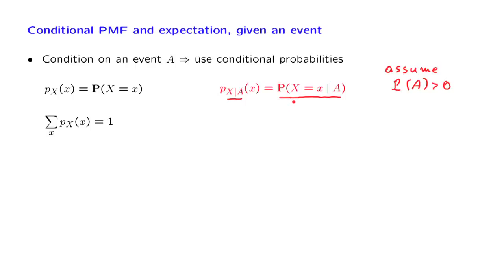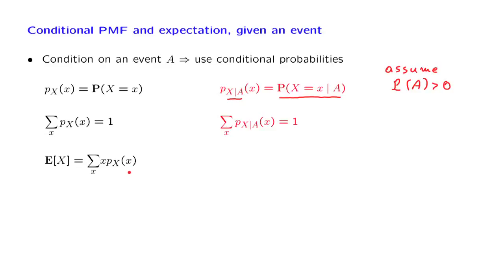This conditional PMF is like an ordinary PMF, except that it applies to a new or revised conditional model. As such, its entries must also sum to 1. Now, the random variable x has a certain mean, or expected value, which is defined the usual way. In the conditional model, the random variable x will also have a mean — it is called the conditional mean, or the conditional expectation — and it is defined the same way as in the original case, except that the calculation involves the conditional probabilities, or the conditional PMF.